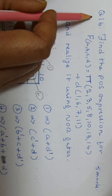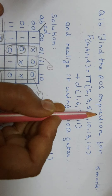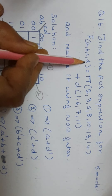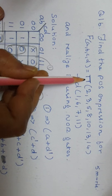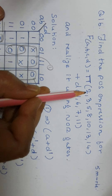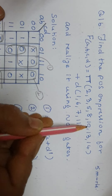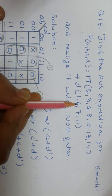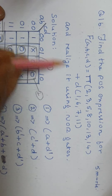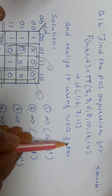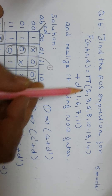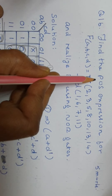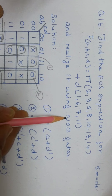Next we shall solve question 1B. Find the POS expression for F of A, B, C, D. Here this is product of max terms: 2, 3, 5, 8, 10, 13, 14, and don't care conditions 1, 6, 7, 11. Realize it using NOR gates. We have to find the simplified POS expression and realize it using NOR gates.